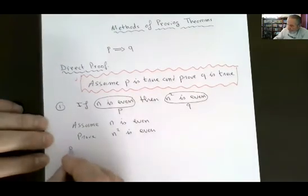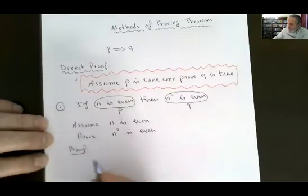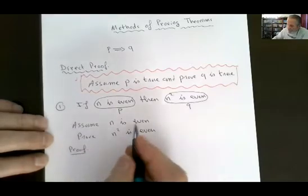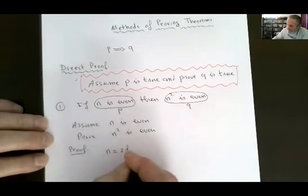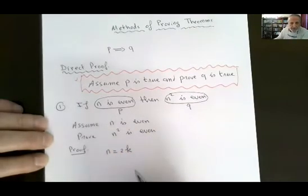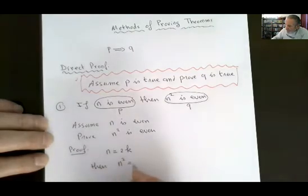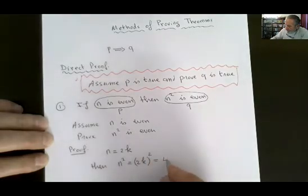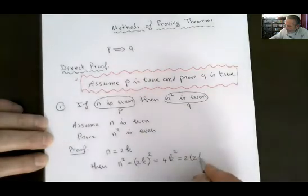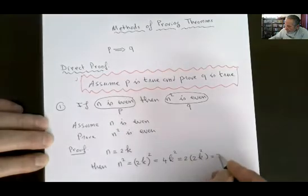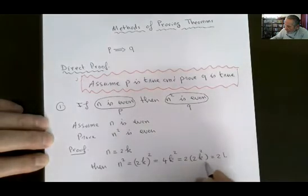And here's the proof. We have n is even, which means n is of the form 2k where k is an integer. Any even number is of this form. Then n squared is (2k) squared = 4k squared = 2 times (2k squared). We call 2k squared = l, so n squared equals 2l, which is even.